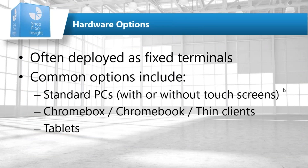Shop Floor Insight is most often deployed as fixed terminals — multiple stations out on the floor so people don't have to walk far. They walk up and scan what they're working on, or use a touch screen. What's become most popular recently is Chromebook — it's an all-in-one unit with no moving fan, so it won't clog up in dusty environments. It's cheap — around $150 — you get a monitor, keyboard, and touchpad, and just plug in a scanner.